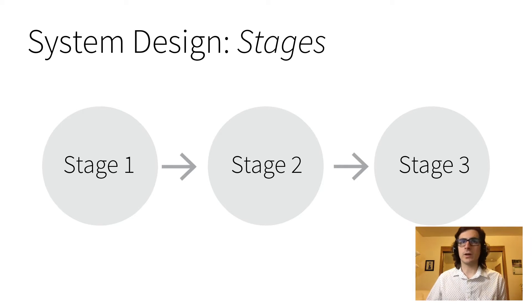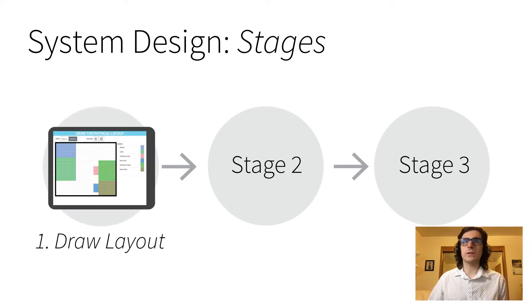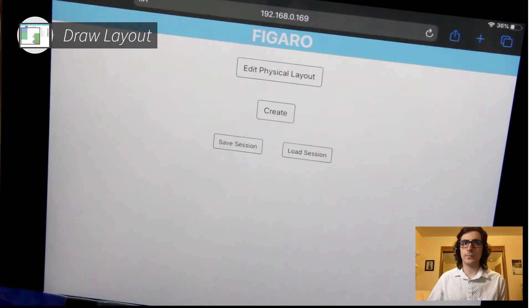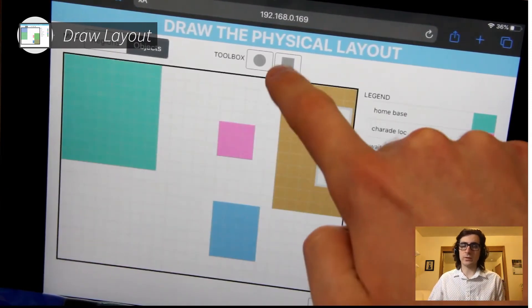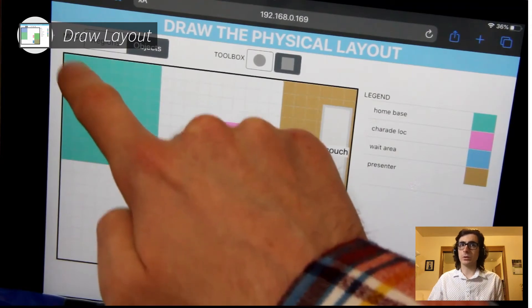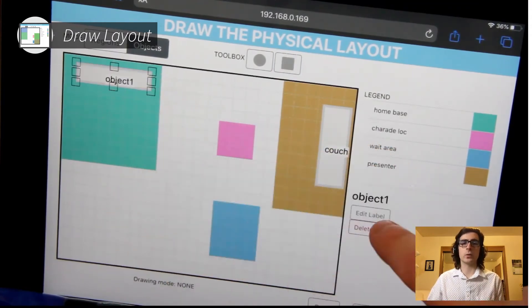There are three high-level design stages, starting with using the tablet to draw a layout. When drawing a layout, demonstrators create a virtual representation of the environment within which a robot will perform a task or have a social interaction.